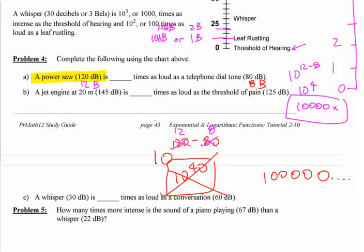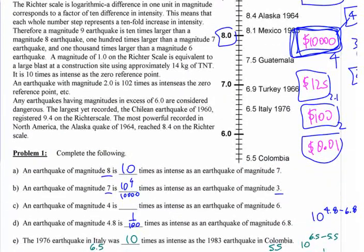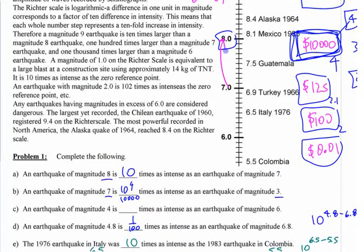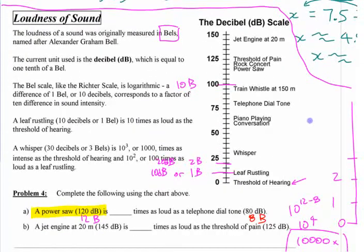I would put down in here somewhere. You know how we said a jump of 1 on here was 10 times as much? You need to change this to bells before you do this. This is 15 bells, 12.5, 10. A jump of 1 bell is 10 times as much. Okay? Notice this is, 3 bells, 1,000 times as much as 1 bell.